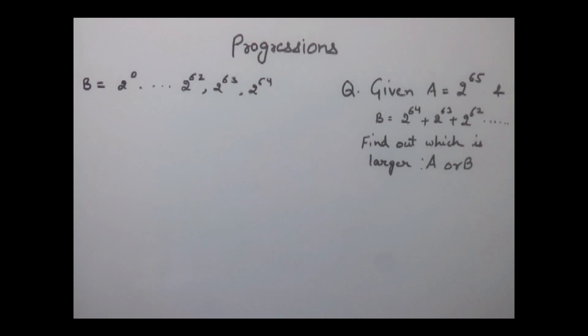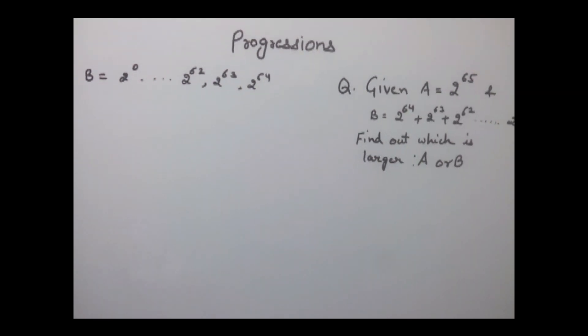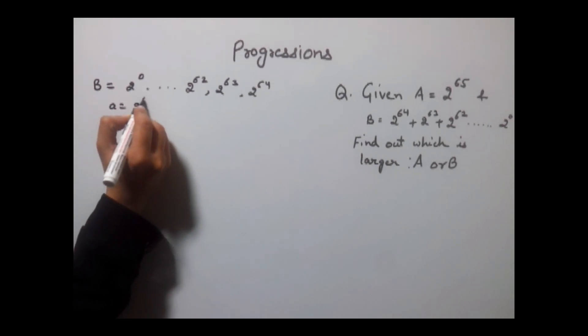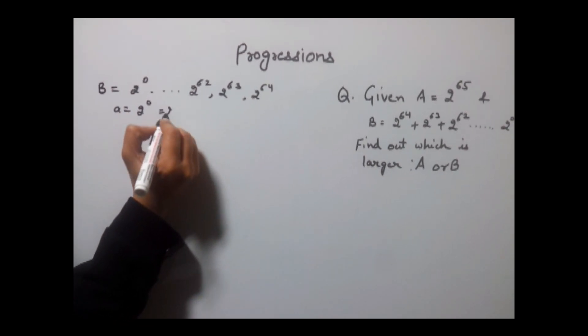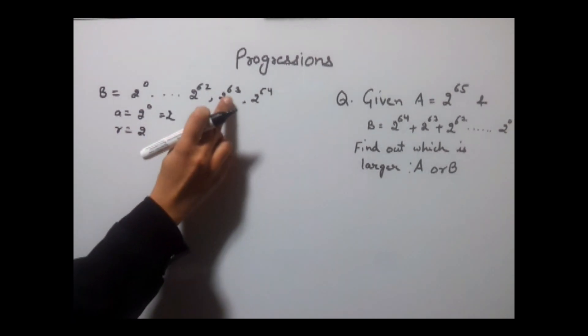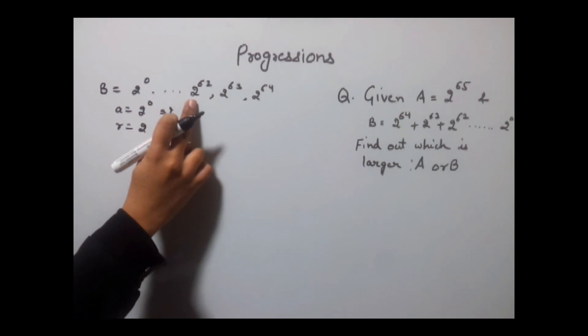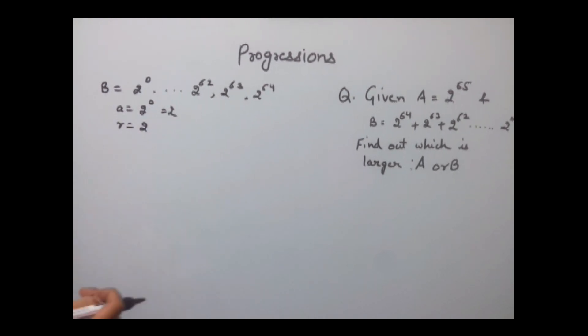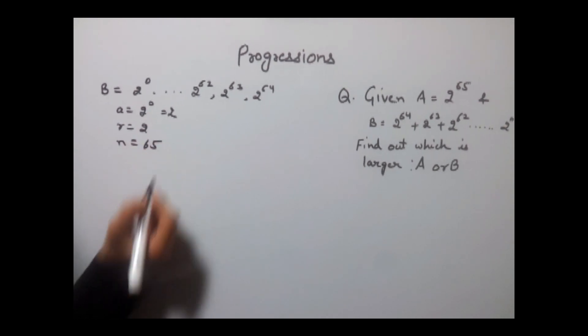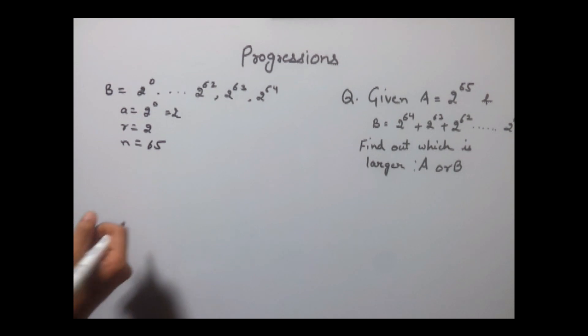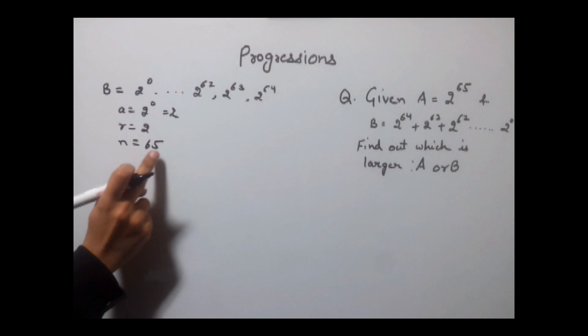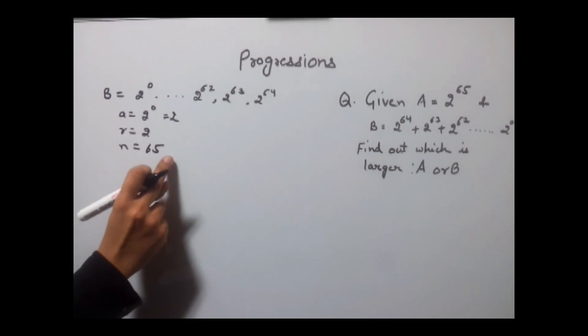This will not make any difference because we need to sum up all these terms. Here A will be equal to 2 to the power 0, or 1. Value of r will be 2, because 2 to the power 63 divided by 2 to the power 62 gives us 2. And value of n would be 65, because there are total 65 terms - 1 term is 0 plus from 1 to 64, which gives us n equals 65.